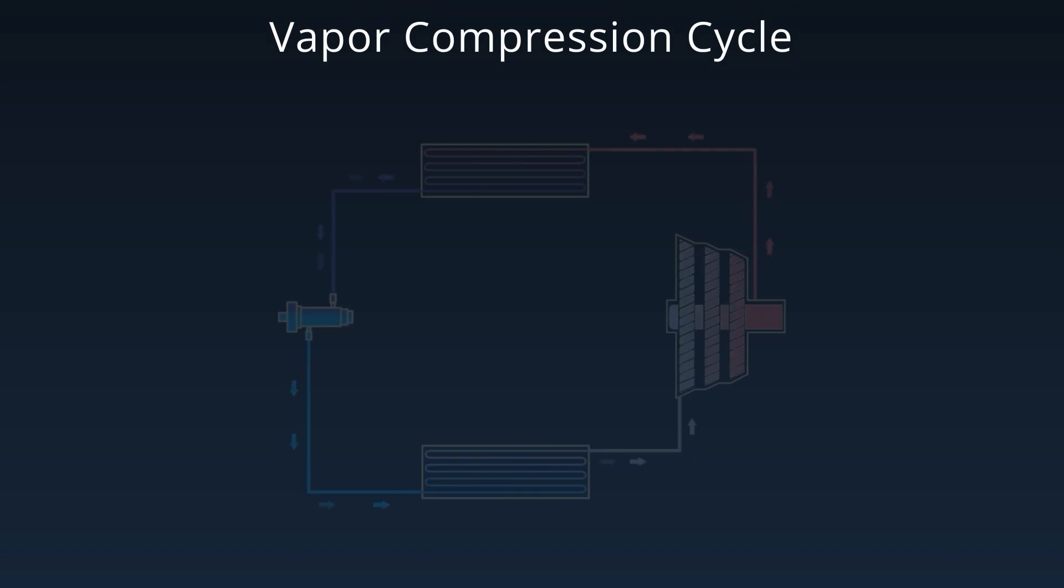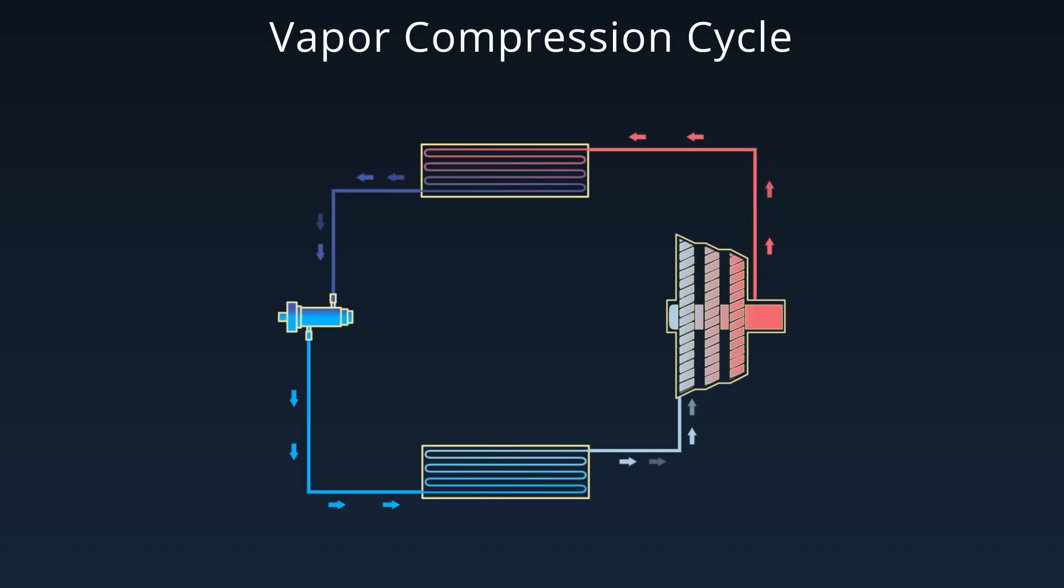In this video, we're breaking down the vapor compression refrigeration cycle, the backbone of modern HVAC and refrigeration systems. Let's start with the four essential components of the cycle: compressor, condenser, expansion valve, and evaporator.